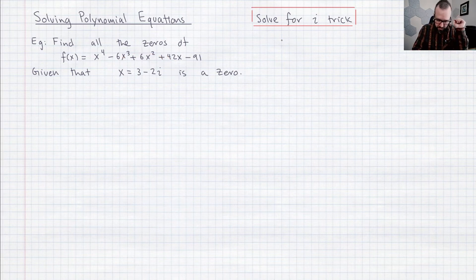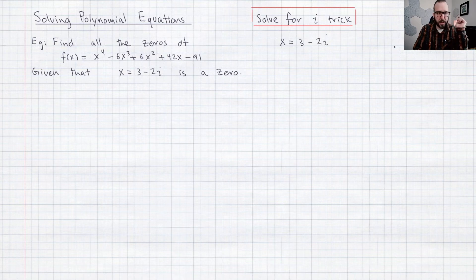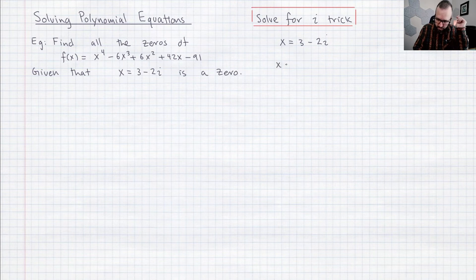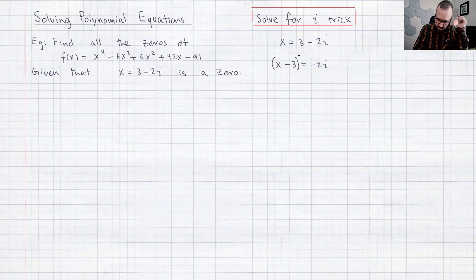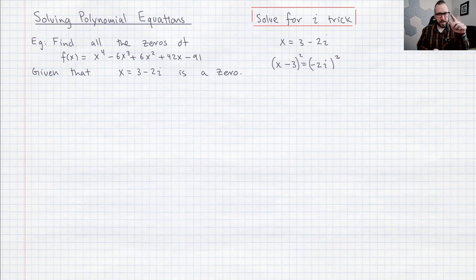So we've got one of these zeros is x equals three minus two i. So I'm going to just try to get the i by itself so I'll move that three over to the other side so I'm just subtracting three from both sides. So x minus three is equal to negative two i and here's the trick what I'm going to do now is square both sides and the reason I think you can see already this means that's going to make all the i's go away.